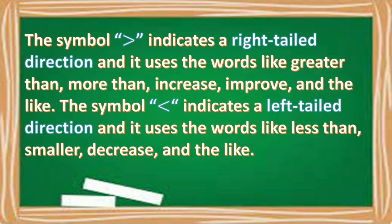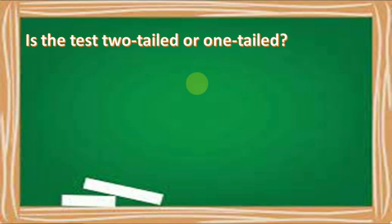On the other hand, if it utilizes greater than or less than symbols, the test is said to be directional or one-tailed. The symbol greater than indicates a right-tailed direction and uses words like greater than, more than, increase, improve, and the like. The symbol less than indicates a left-tailed direction and uses words like less than, smaller, decrease, and the like.